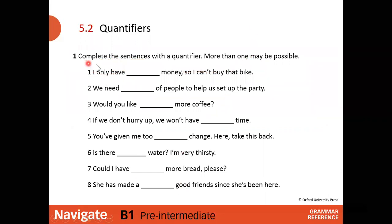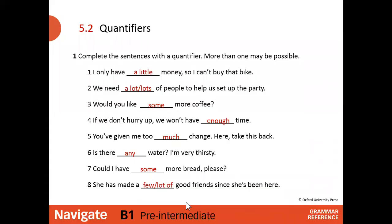Now you should complete the sentences with quantifiers — more than one answer may be possible. There are eight sentences. Take your time, read the whole sentences, and decide what quantifier fits in each space. Once you've finished, you can see the answers and check your work. If you have mistakes or questions, write in the comment box. Keep learning English — see you guys!